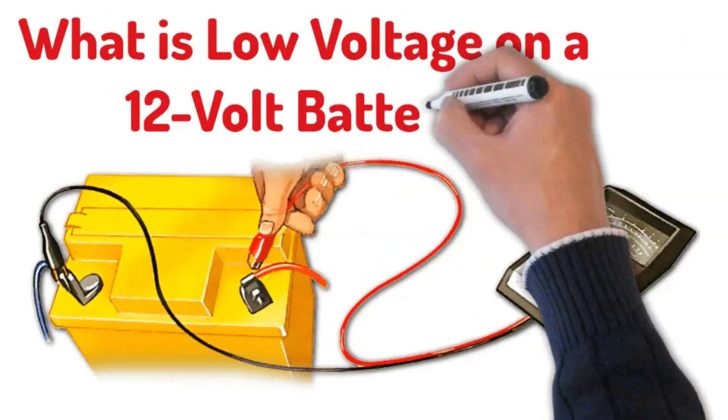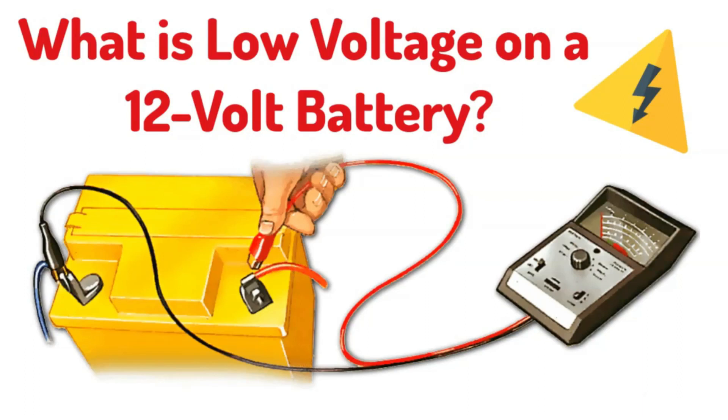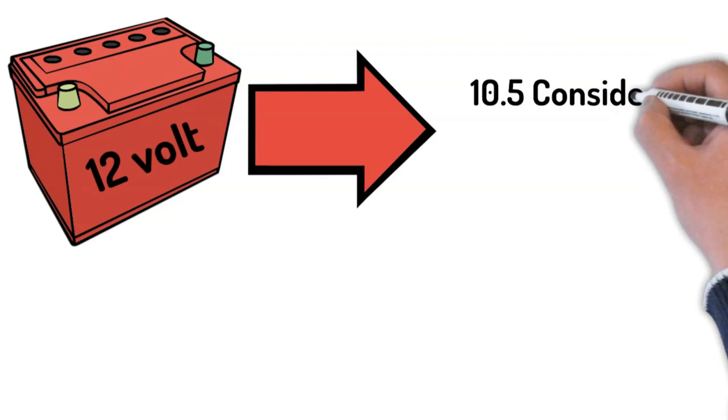What is the low voltage on a 12 volt battery? The low voltage on a 12 volt battery is typically considered to be around 10.5 volts.